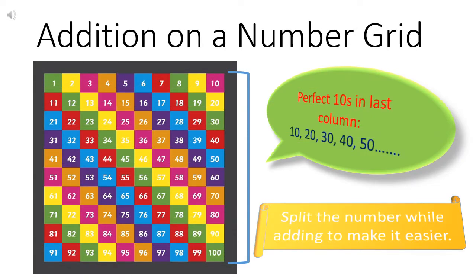In the previous video we had learnt addition on a number grid. Number grid per addition karna sikhha tha hum ne. We had learnt that we have perfect tens in the last column of the number grid. Number grid ka jo last column hota hai, us mein perfect tens hota hai: 10, 20, 30, 40, 50, 60, 70, 80, 90, 100. These are perfect tens.